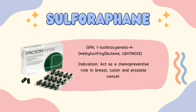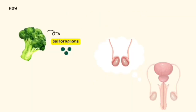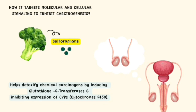Another chemopreventive agent derived from natural products is sulforaphane. It plays a chemopreventive role in breast, colon, and prostate cancer. It is a classic example of a natural product that can target multiple molecular and cellular pathways that modulate cancer. For example, sulforaphane can help detoxify chemical carcinogens by inducing glutathione S-transferases and inhibiting expression of CYPs.